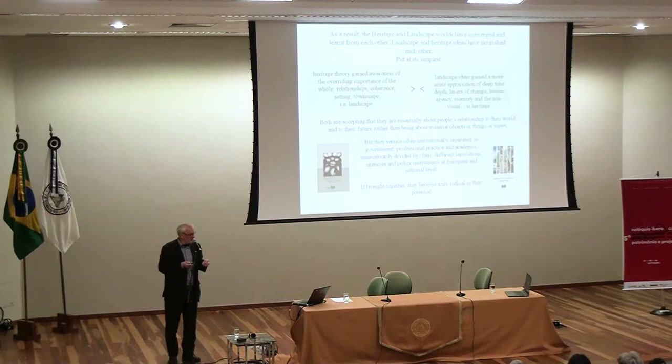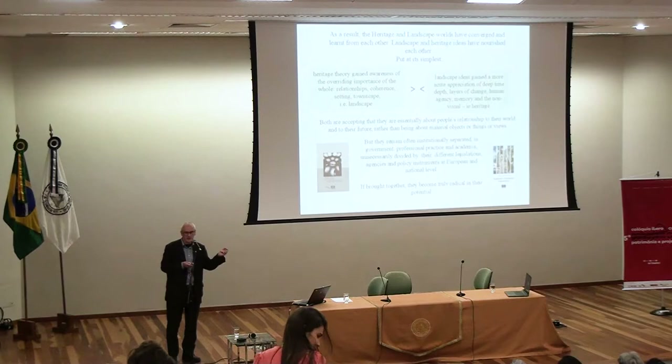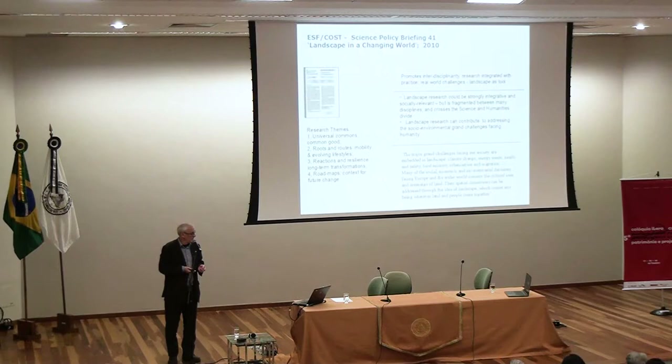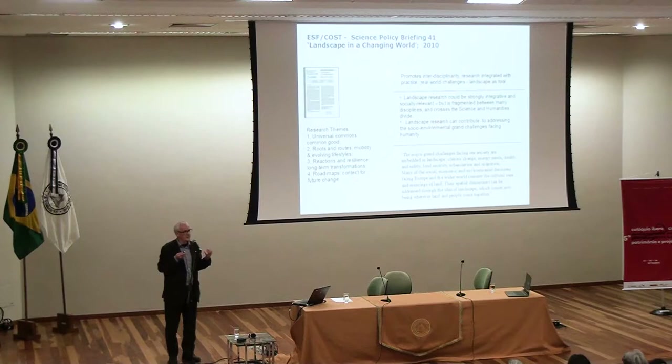Even back in 2000, one of the things the ELC said was that there shouldn't be a government department of landscape — landscape issues should be in all government departments, a cross-cutting theme in the mainstream — and it hasn't happened in many places yet. It's the same problem as with interdisciplinarity. It's very difficult to make people even see the boundaries, let alone climb over them or knock them down. As a colleague in the Netherlands summarised: governments have problems, universities have departments, and the two things fight against each other.